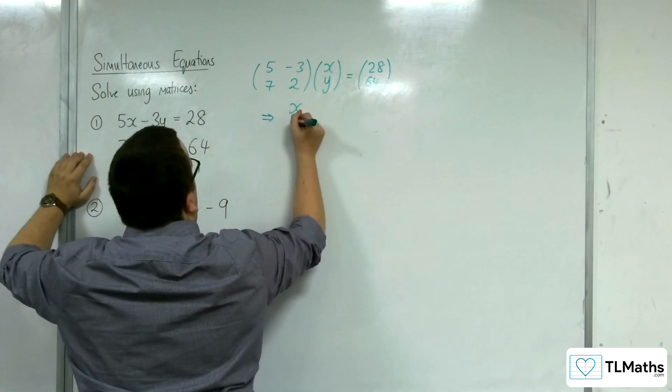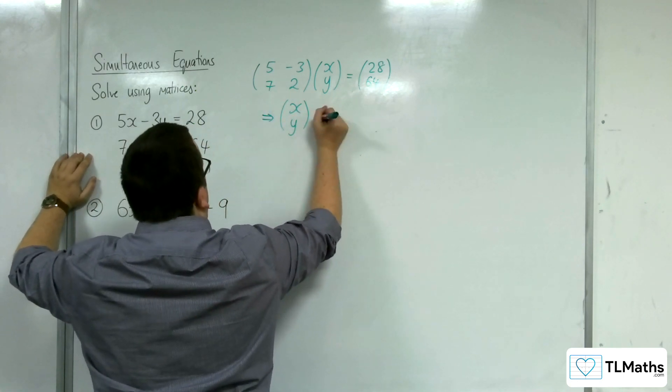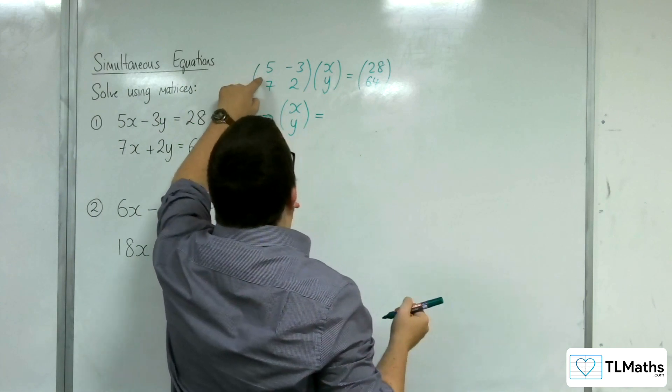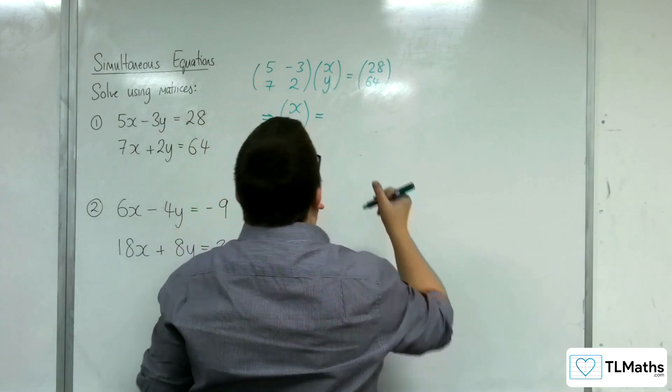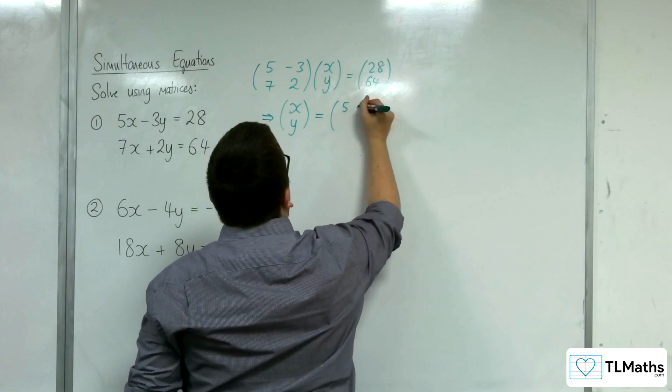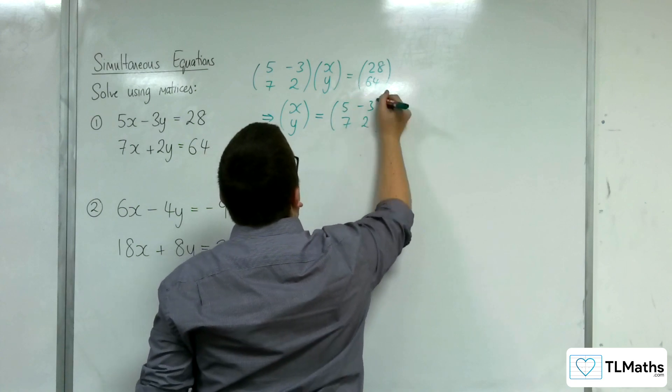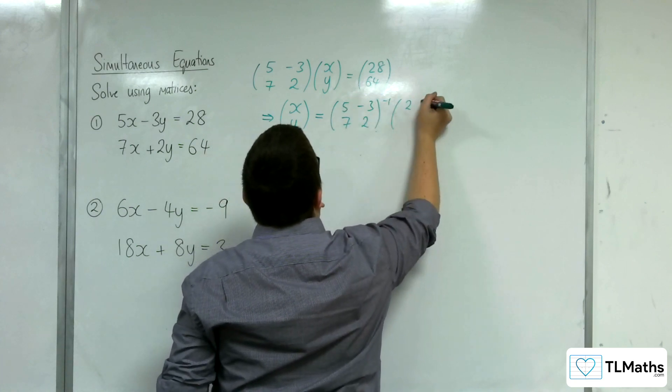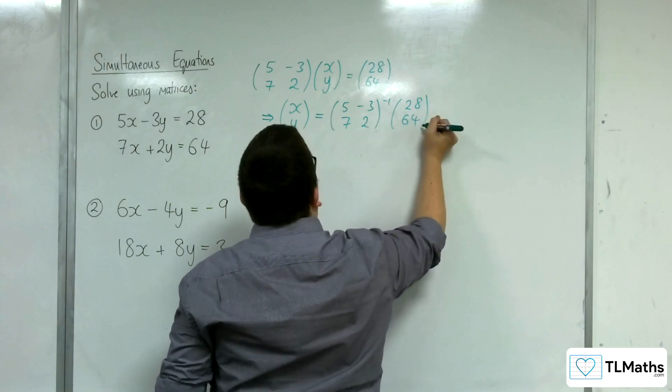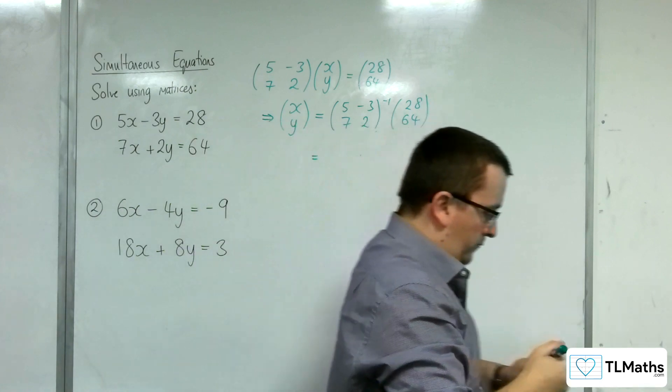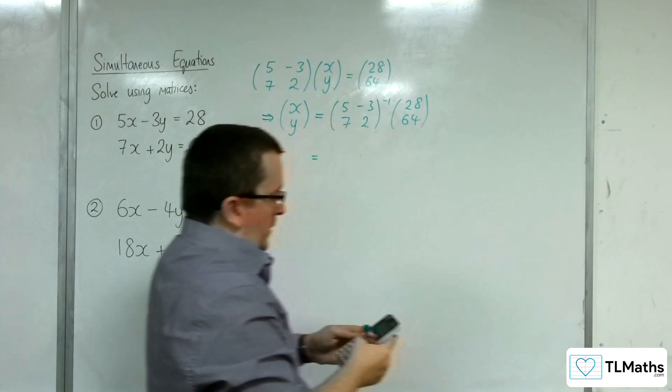So x, y will be equal to the inverse matrix of this one here, times 28, 64.